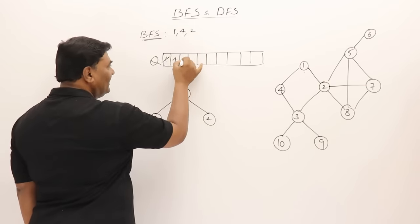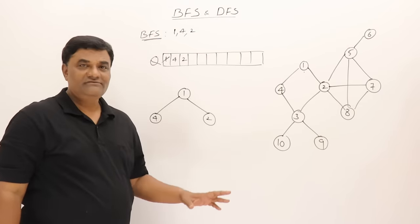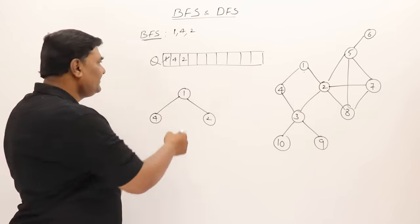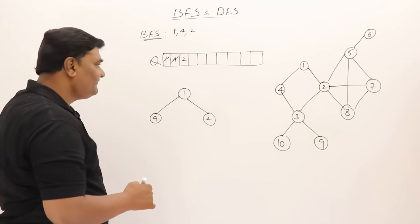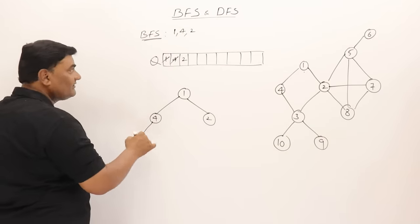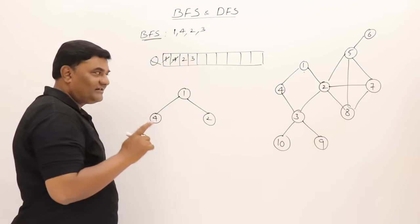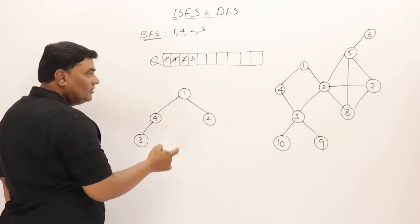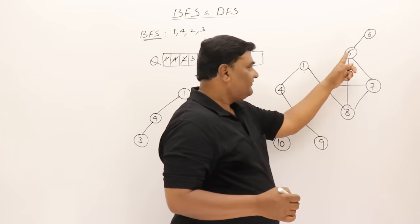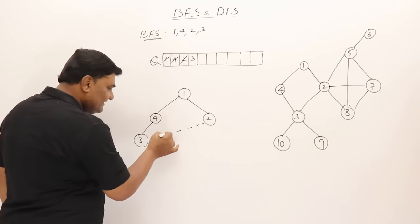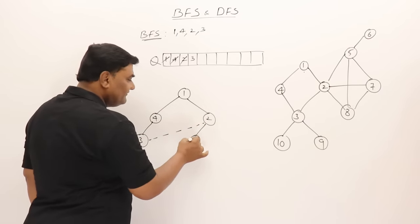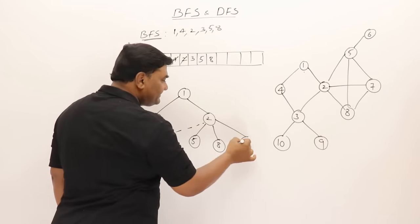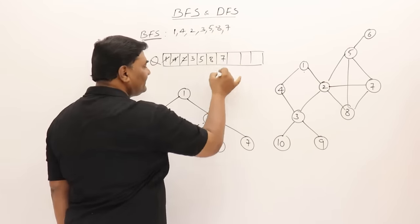Vertex 1 is now completely explored — first iteration done. Repeat the procedure: select the next vertex from the queue, which is 4. Start exploring 4 — adjacent is 3, so add 3 to the queue. Nothing else is adjacent to 4, so 4 is completely explored. Next vertex for exploration is 2. Adjacent to 2 are 3, 5, 7, and 8. Three is already visited, so go to 5, then 8, then 7, adding each to the queue.